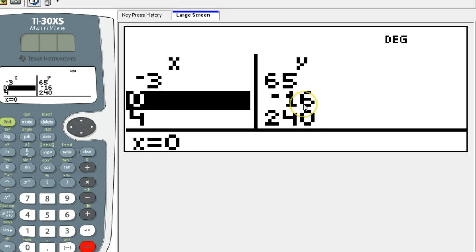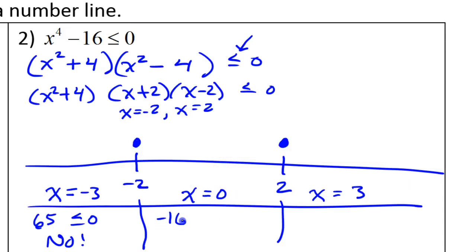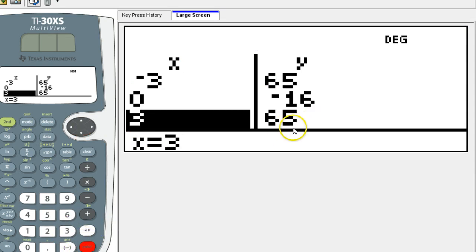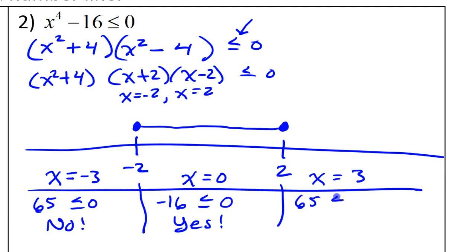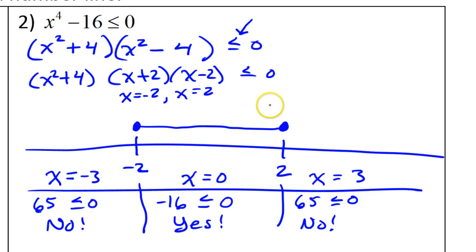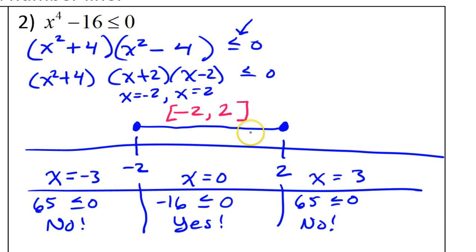At 0 we have negative 16. Is negative 16 less than or equal to 0? Yes — that means we will have solutions here, shown as a line segment. At 3 we're back to 65. Is 65 less than or equal to 0? No, so we leave that blank. This is the graph of the solution set. In interval notation, I put negative 2 to 2 with closed brackets: [−2, 2]. That's the solution for problem number two.